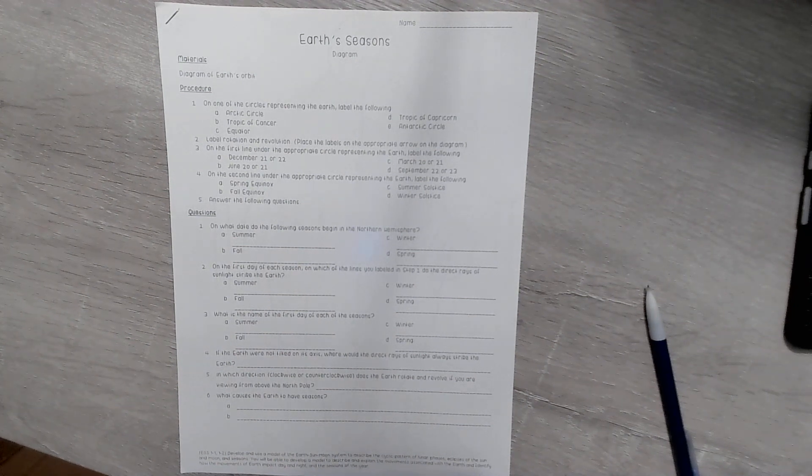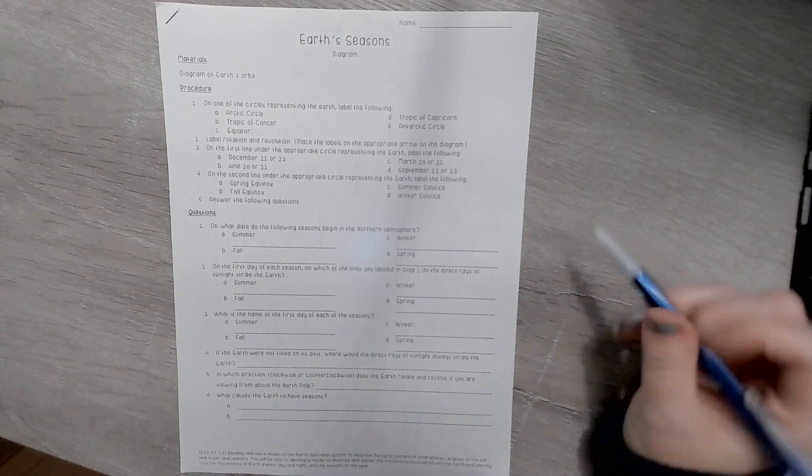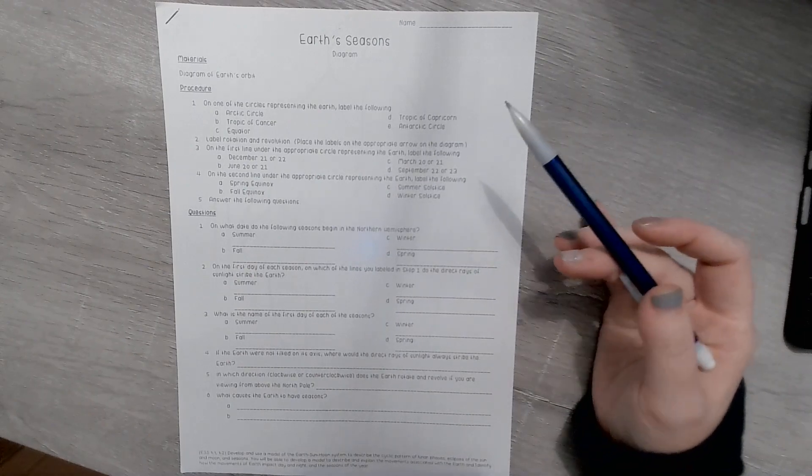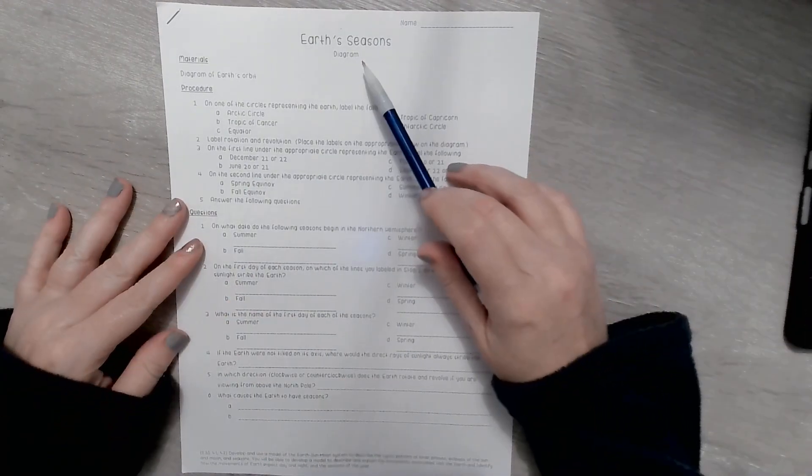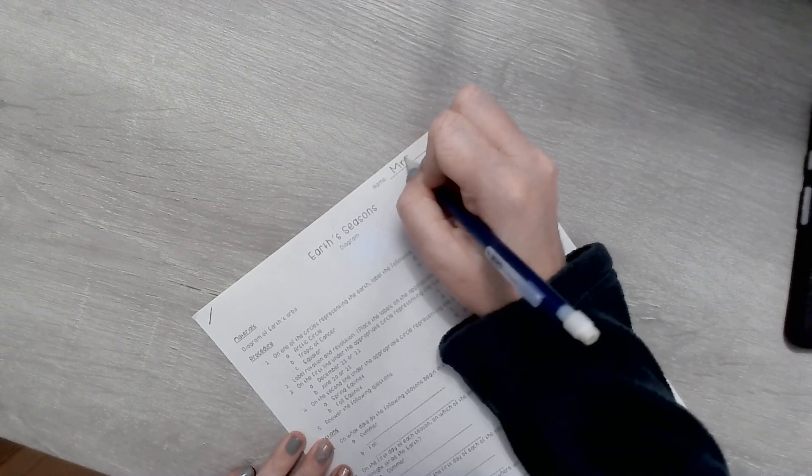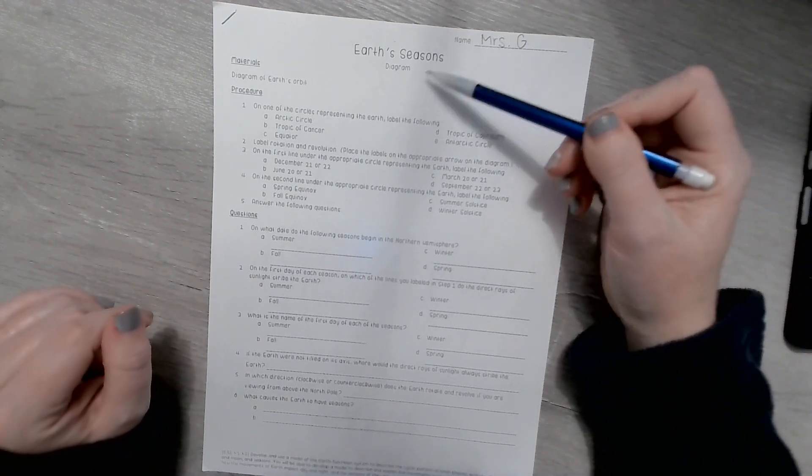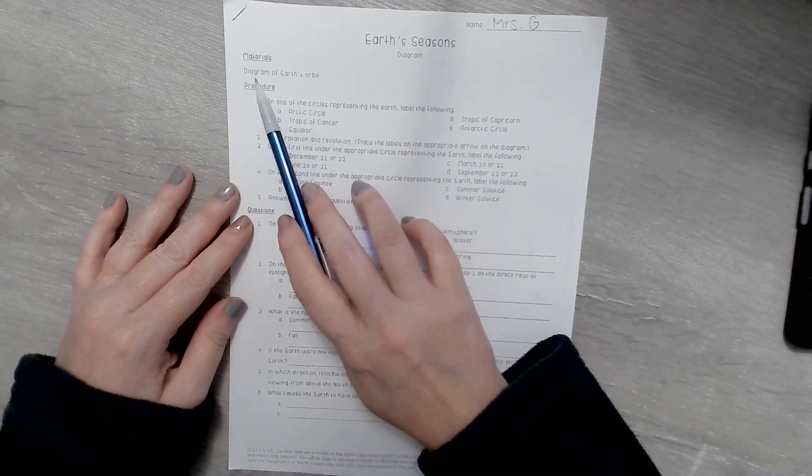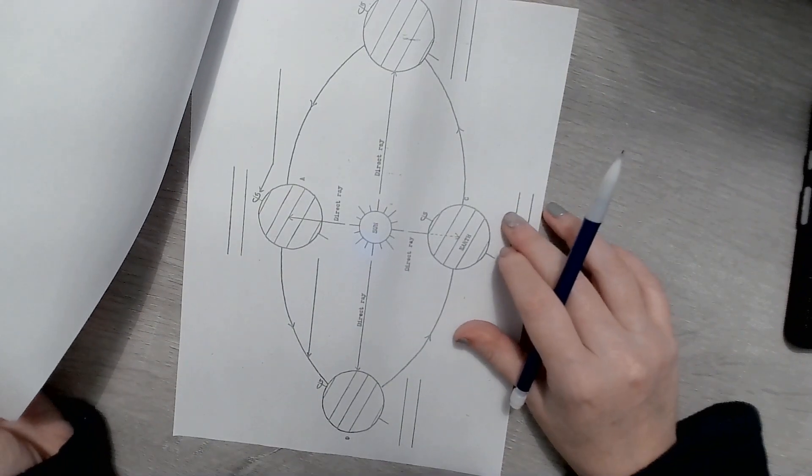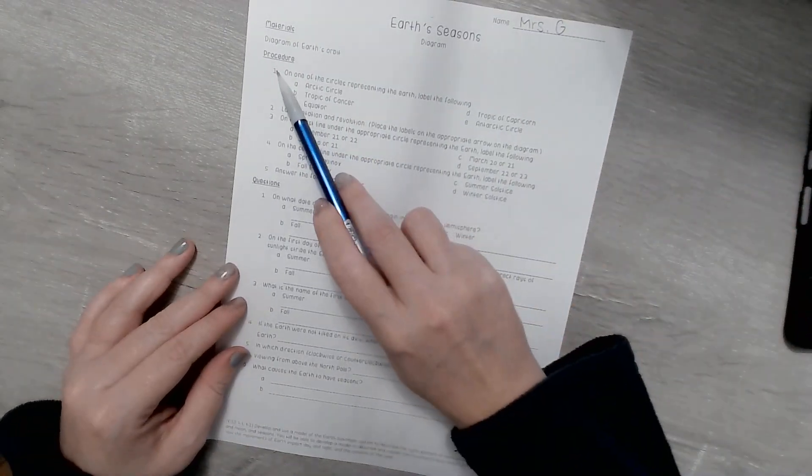Okay, so this is the seasons diagram that you are able to do for the Earth and Sun portion of your choice activities. This is the more hands-on sort of task. First things first, if this is the page that's in front of you, make sure you get your name put up at the top. This is Earth Seasons Diagram. The only materials you're going to need for this project is the diagramming of Earth's orbit, and that is already attached for you. This is what works.